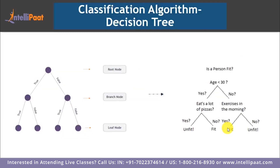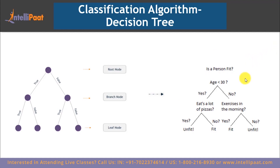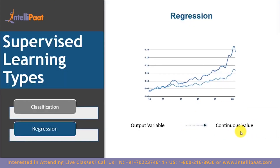Decision tree, as the name states, is a tree-based classifier in machine learning. You can consider it an upside-down tree where each node splits into its children based on a condition. For example, we build a decision tree to find out if a person is fit or not. Based on a series of test conditions, we finally arrive at the leaf nodes and classify the person as fit or not.